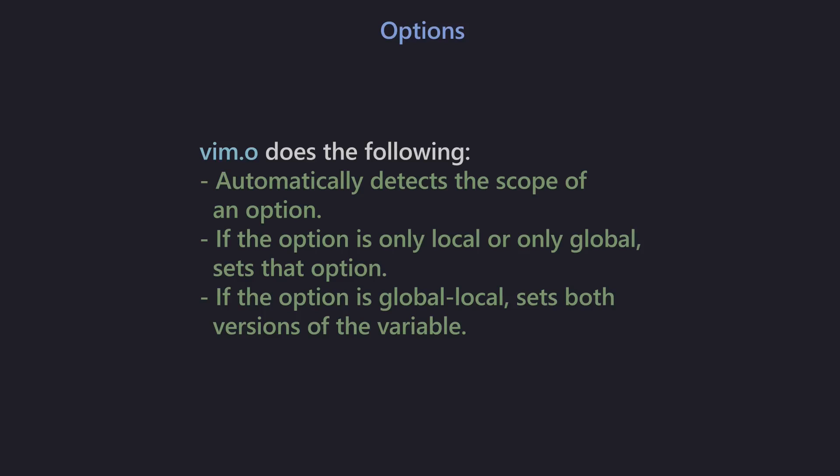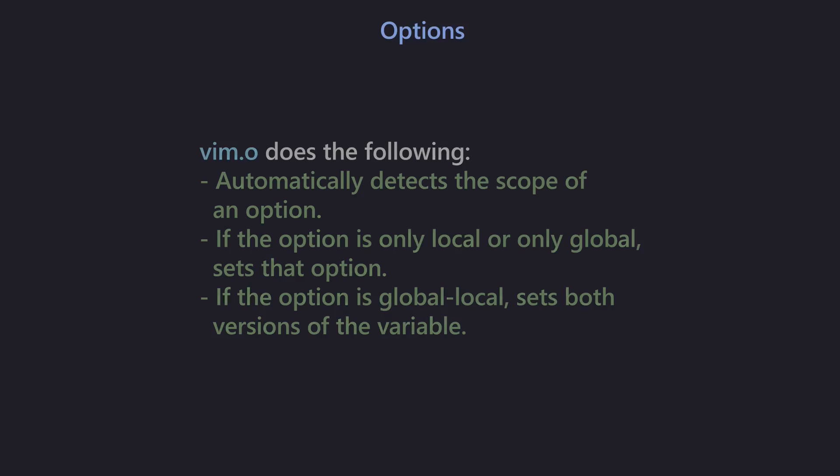I would say you should use vim.o as little as possible. Use vim.opt like we've been doing throughout the entire series for as much as you can. However, if you need to be more specific — targeting an individual buffer or window — then use vim.bo, vim.wo, or vim.to. For your own sanity, just don't touch vim.o unless you know you absolutely have to or unless you're seeking the specific behavior it provides.